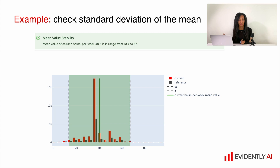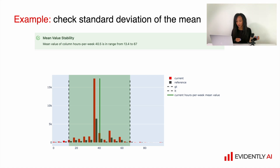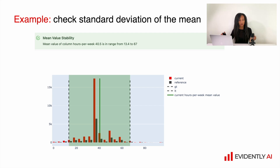Let me show you an example of an auto-generated test from the Evidently library. In this case, we have a test called 'mean value stability'. What we do here is calculate the mean value for a numerical feature — in our case, it's 'hours per week' — and we compare this mean value with the range observed during the reference data. The range from reference is from 13.4 to 67, and our calculated mean value is equal to 40.5, so it's within the range. This is why the test is successful. There is a supportive picture showing the distribution from the current and the reference dataset, the conditions and the calculated value — you can see that the calculated value is within the expected range and all passed.